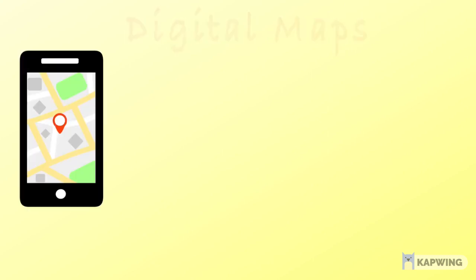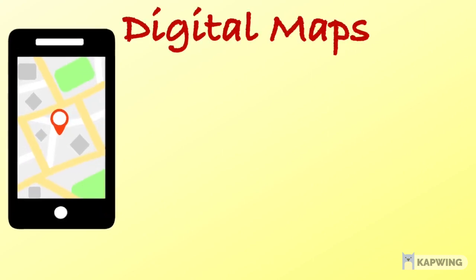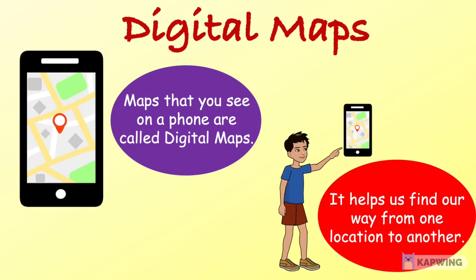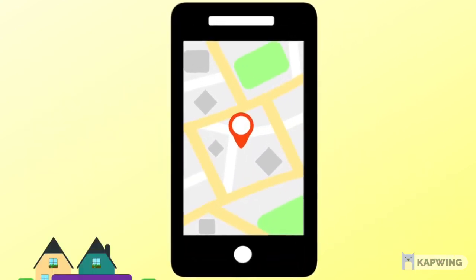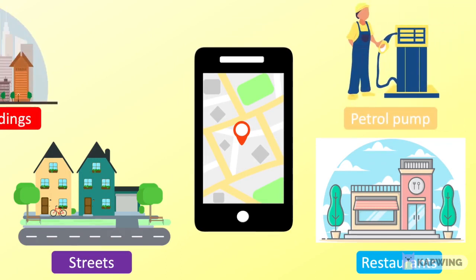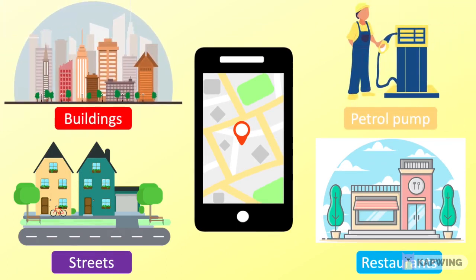Kids, we have another kind of map used to find a place or an object — digital maps. Maps that you see on a phone are called digital maps. It helps us find our way from one location to another. Digital maps may show streets, places to eat, places to buy petrol, buildings and other important locations. So this video was just an introduction to know what maps are and their uses.